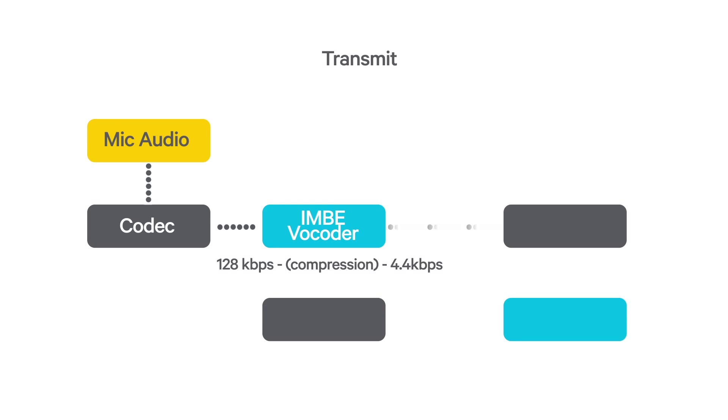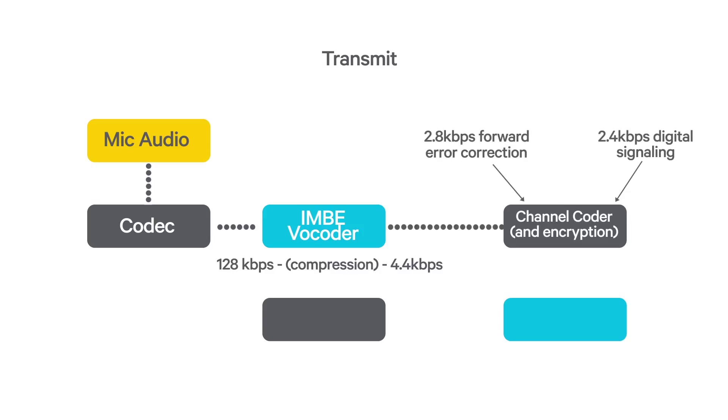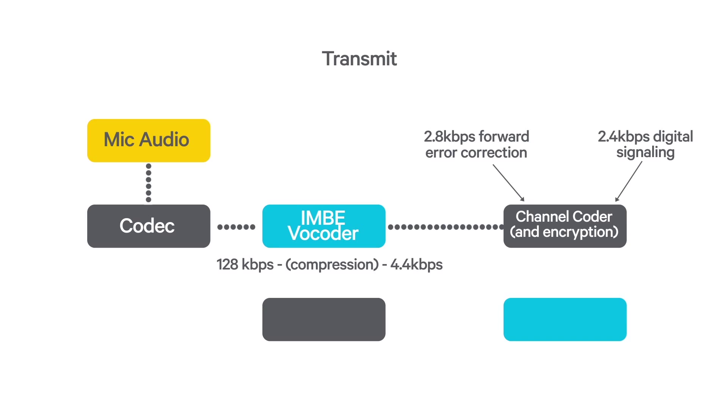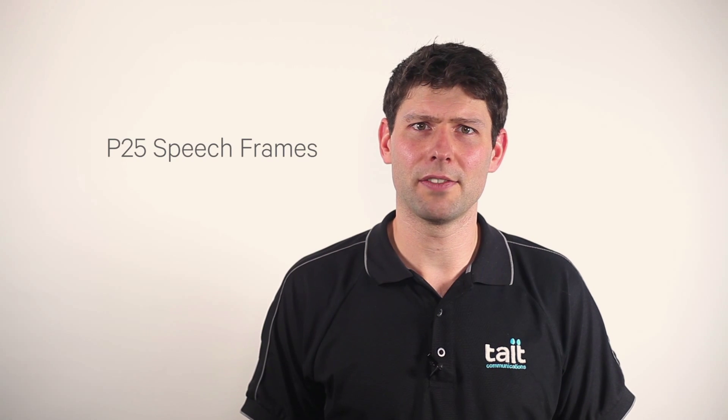Then, to protect the voice signal from errors caused by fading or interference during transmission, 2.8 kilobits per second of forward error correction is added to the voice. Signalling information used to control access to the repeater and identify the caller or intended recipient is interwoven with the voice signal, adding a further 2.4 kilobits per second to the data stream. The output of the vocoder may also be encrypted to protect the voice from unauthorized listening. The signalling, voice and error correction is then formatted into P25 speech frames.